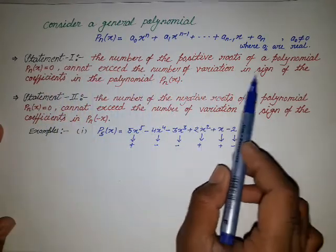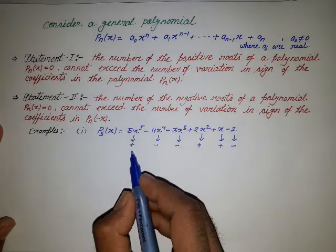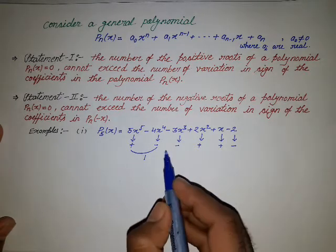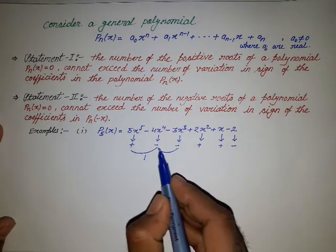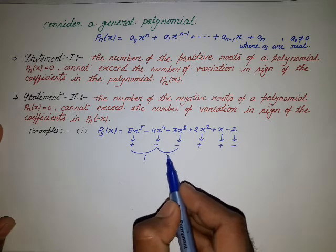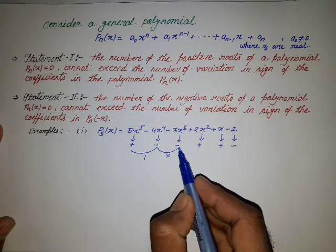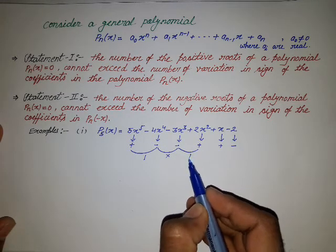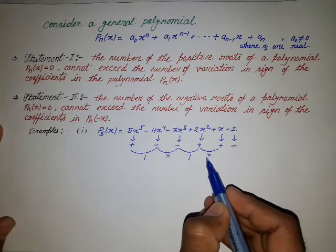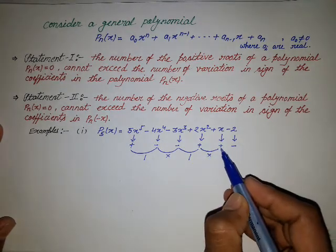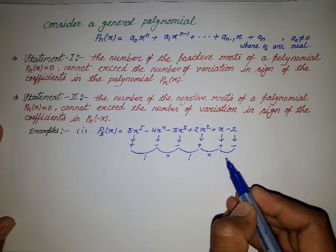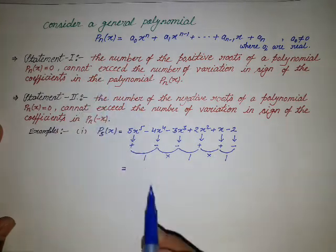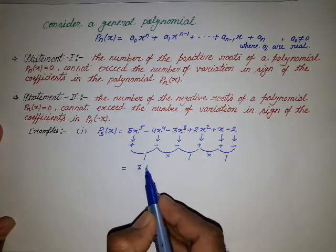Using the first statement, we look for sign variations. There is a variation from the first to the second term (positive to negative): one positive root. No variation from second to third (negative to negative). There is a variation from third to fourth (negative to positive): one more positive root. No variation from fourth to fifth. A variation from fifth to sixth (positive to negative): one more positive root. So by statement one, we have three positive roots.